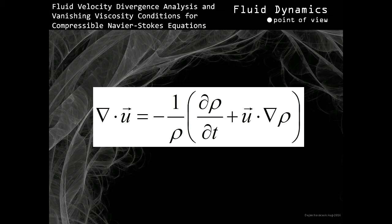Let's focus on fluid density for a moment. The first term in the brackets represents the rate of change of fluid density over time. The second term in the brackets includes the gradient of fluid density and velocity, which in essence represents the rate of fluid density change over space. What that really means is that fluid velocity vector field divergence depends on the rate of change of fluid density over time as well as the rate of change of fluid density over space. Let's look into the second term in the brackets a bit closer.